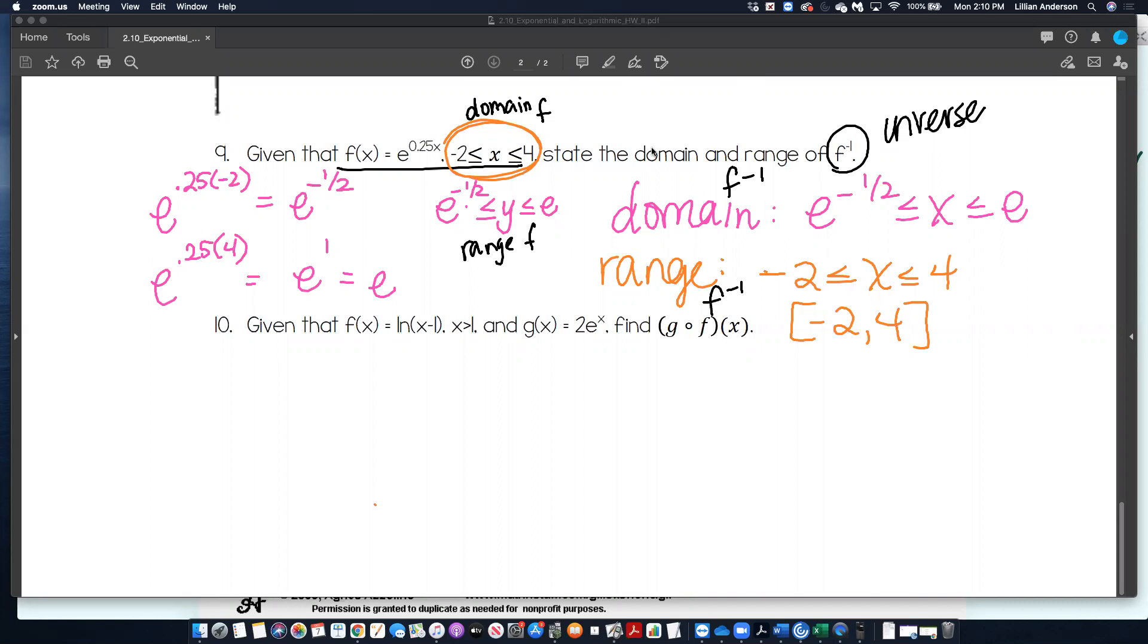For this one, remember this symbol means composite. I have to plug f into g. Okay. Remember that e raised to the ln cancels out. So I'm left with 2 times x minus 1. So then it's just 2x minus 2. That'll be your answer. Thank you.